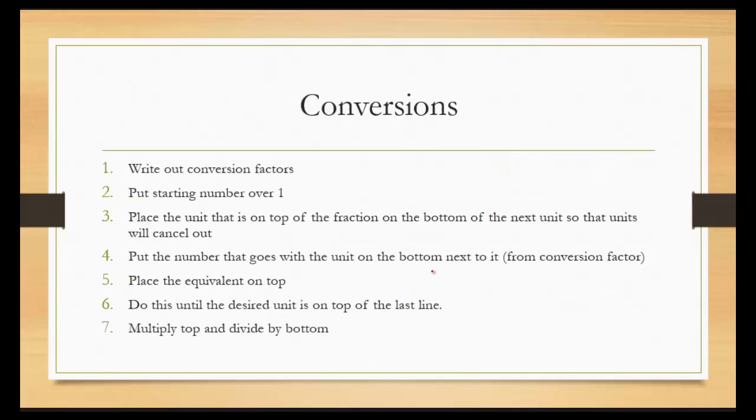So for conversions, first you write out the conversion factors you need. Then you put the starting number over 1. Place the unit that is on top of that fraction on the bottom of the next one, so the units will cancel out. Put the number that goes with that unit on the bottom next to it from the conversion factor. Place the equivalent on the top. And do this until the desired unit is on the top of the last line. Multiply the top and then you divide by the bottom.